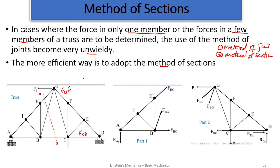For the method of sections, the first thing is to find the reactions — that is very necessary. We know how to find the reactions from previous videos: you consider the entire body, draw the free body diagram, and get your upward reaction and horizontal reaction. Then use summation of forces to determine the reactions.